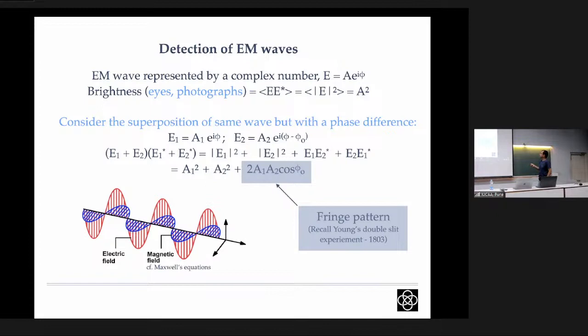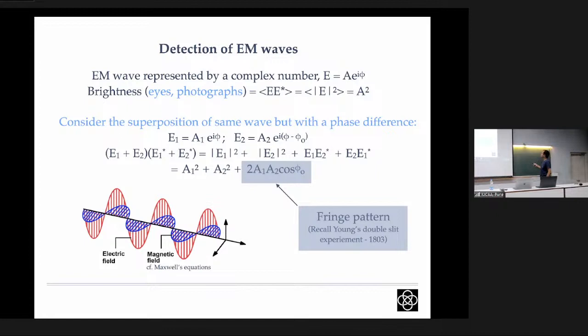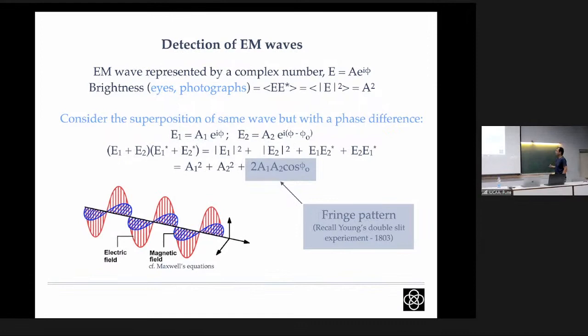We can also consider superposition of EM waves because EM waves interfere. Consider two EM waves E1 and E2, represented as vectors with a phase difference φ. If we compute the superposition E1 + E2 and take the complex conjugate product, in addition to intensity terms from A1 and A2, we also get a cross term A1·A2·cos(φ). If you recall the double-slit experiment, this is exactly the interference term — what we see when two EM waves interfere with each other.